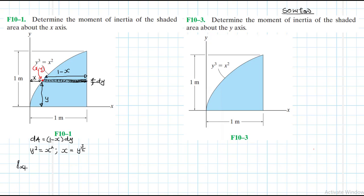So moment of inertia about the x-axis, I sub x, is equal to integral of y squared dA, which is equal to integral of y squared times our dA. We said 1 minus x is equal to 1 minus x dy. So let's continue.